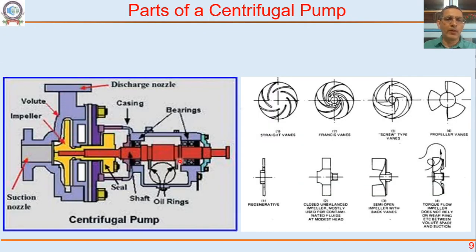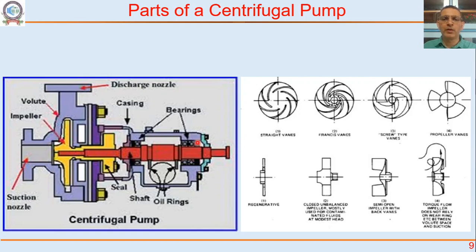This is how a centrifugal pump actually looks in cross-section. This is the discharge, this is the volute, this is the impeller, this is the eye of the impeller, suction, this is the shaft, these are the bearings which support it, this is the sealing fluid so that the fluid inside does not come out, and there is a motor — the drive mechanism — on this side. These impellers are of various types and depending on those impellers the pump performance will change — we will see that in the next class.